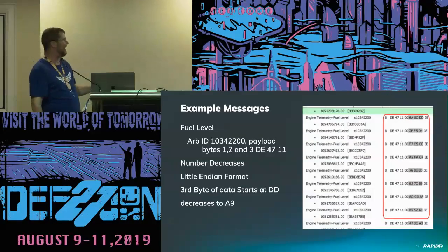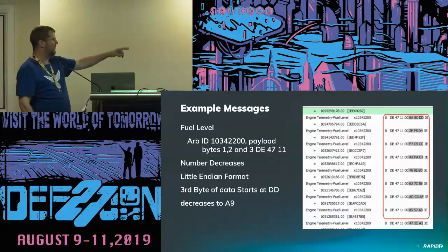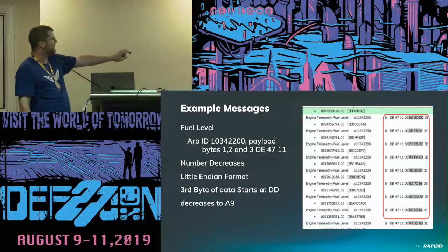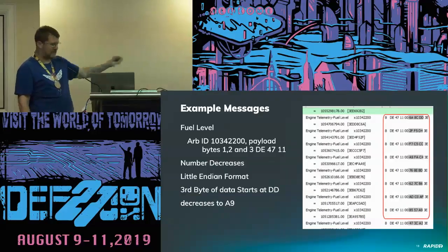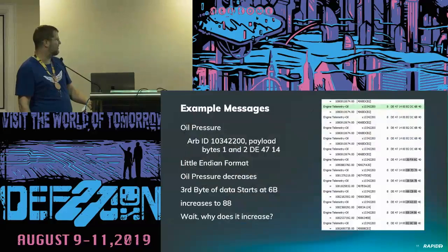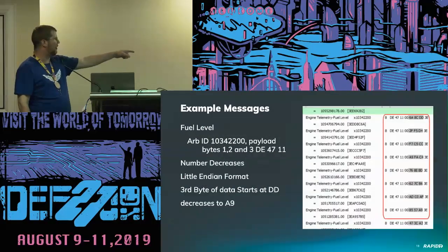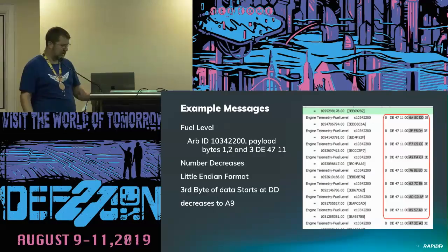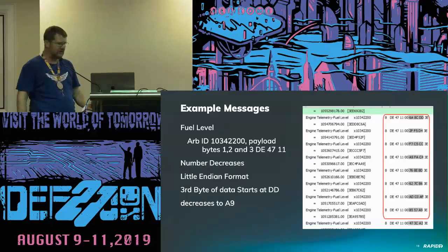Fuel level: this one increments normally. Same arbitration ID, 10342200. Same first two bytes DE47, but now it's 11 instead of 14. So 14 controls oil pressure — same controller, 11 in the preamble controls fuel level. We can actually hack both of those. I'll give you a demonstration right after.